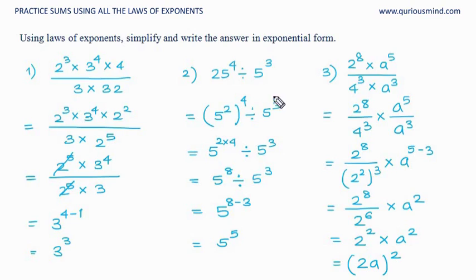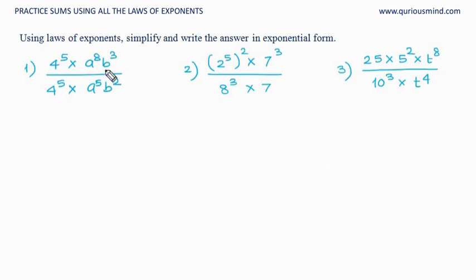Please understand that 4, 8, 32 are all powers of 2, and 3, 9, 27, 81 are all powers of 3. So we need to look at them and convert them into a common base. Once we get the same base we will be able to cancel out lots of things. Here again we see a combination, so we will convert them into numbers having the same base.